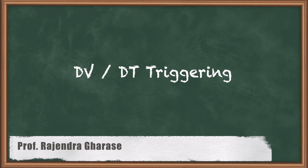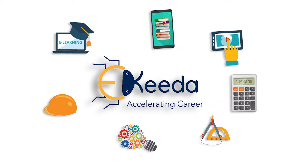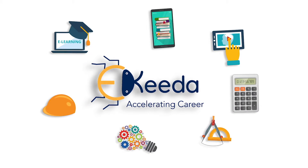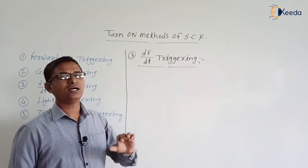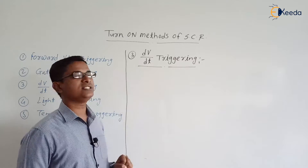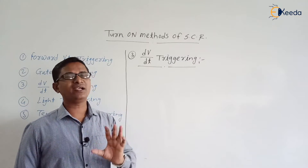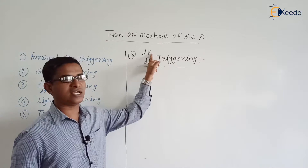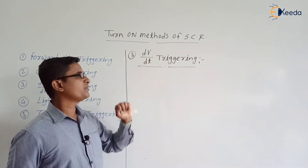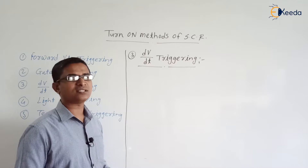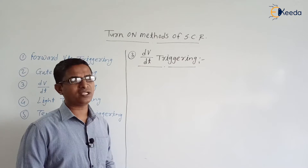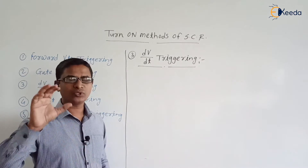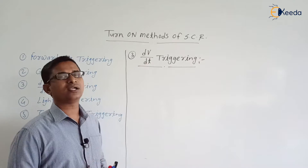It is also known as high dV/dt triggering. Here dV/dt indicates the rate of change of voltage with respect to change in time. dV indicates the change in the voltage across the SCR, divided by dT, that is the change in time. Let us discuss how the high value of dV/dt will help the SCR to switch from blocking mode to the conduction mode.